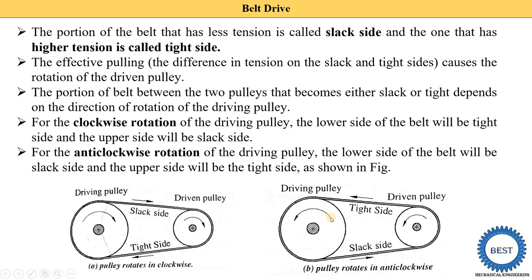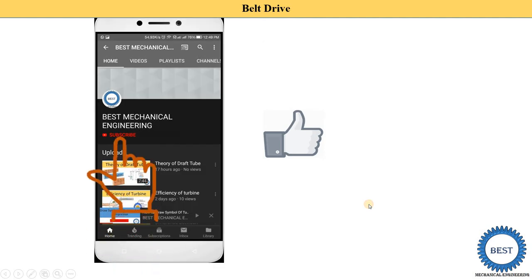When the driving pulley rotates in the anticlockwise direction, the belt is pulled from the upper side of the pulley, so the upper side is called the tight side and the lower side is called the slack side. Therefore, for clockwise rotation the tight side is the bottom, and for anticlockwise rotation the tight side is the upper side.